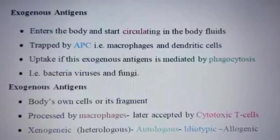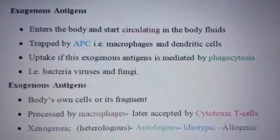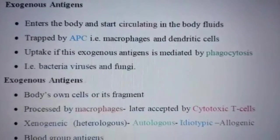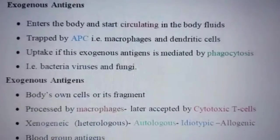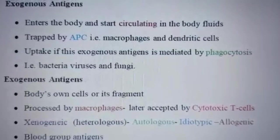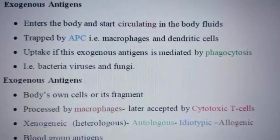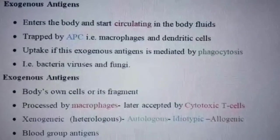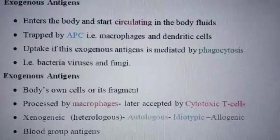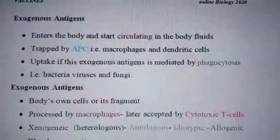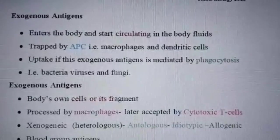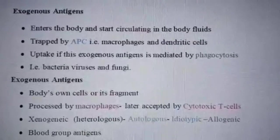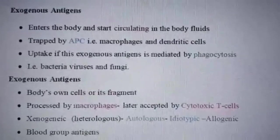Exogenous antigens, as the name suggests, enter the body and start circulating in the body fluids — they are not part of the body or the cell. They are trapped by antigen processing cells, that is macrophages and dendritic cells. The uptake of these exogenous antigens is mediated by phagocytosis, which is carried out on bacteria, viruses, or fungi when they enter the cells and are recognized by antigen processing cells.